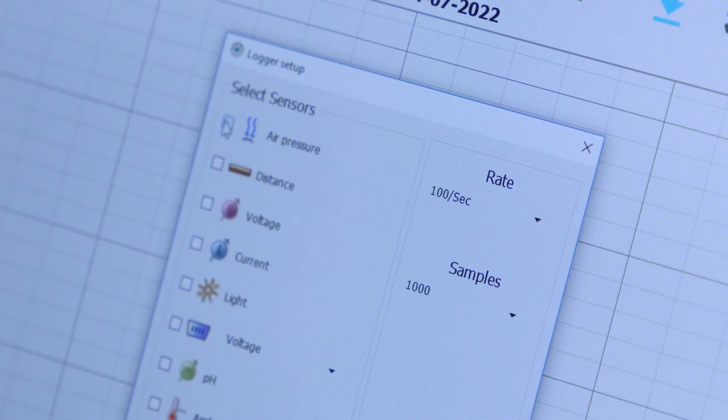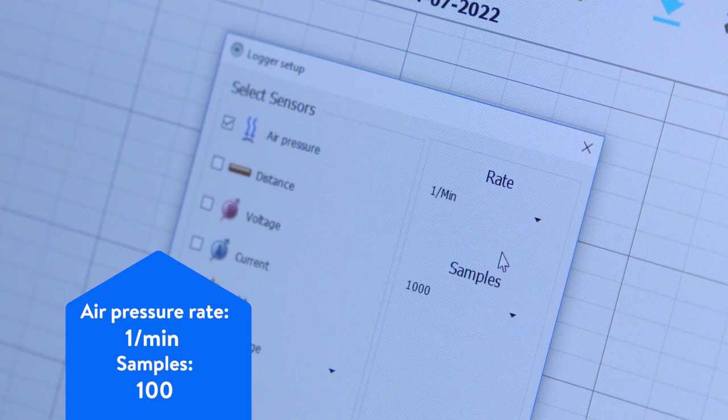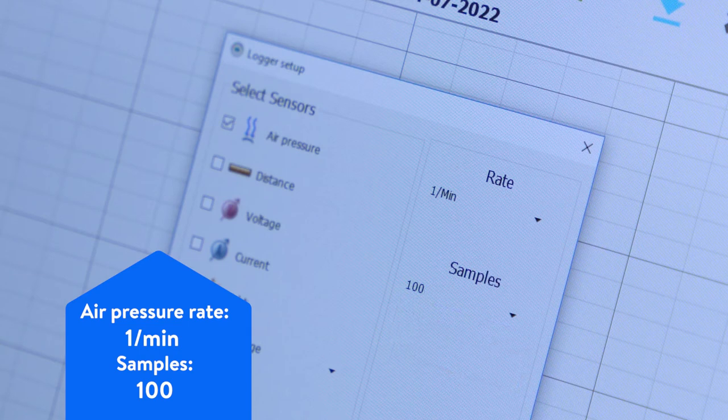In the logger setup window select the air pressure sensor, select one per minute from the rate drop down menu and select one hundred from the sample drop down menu.